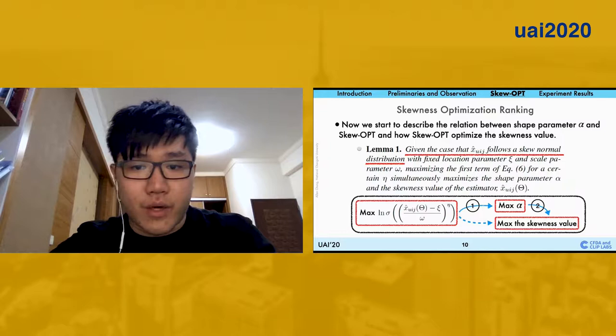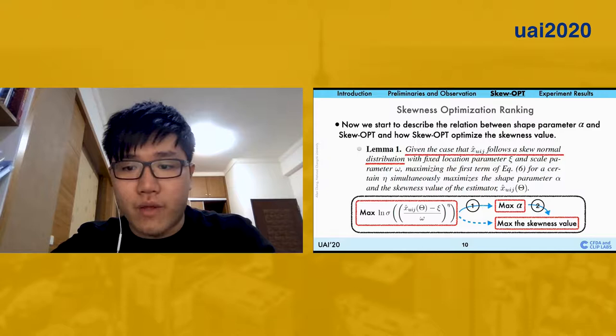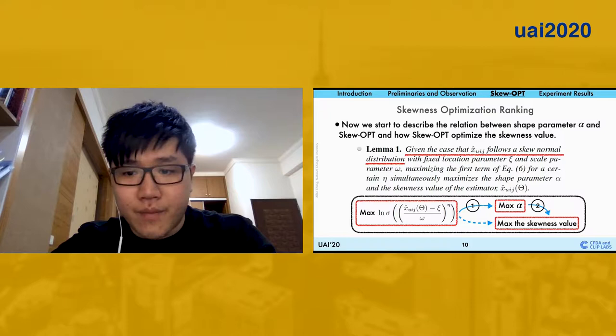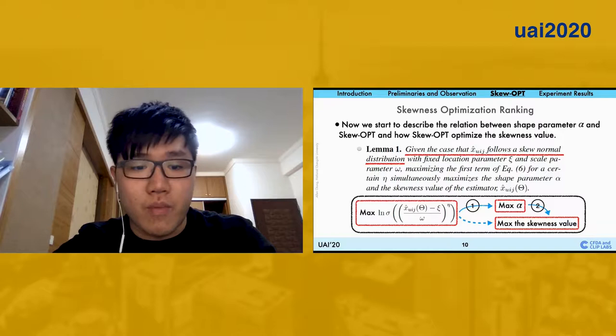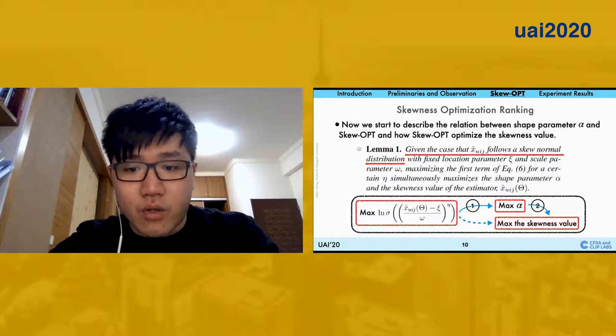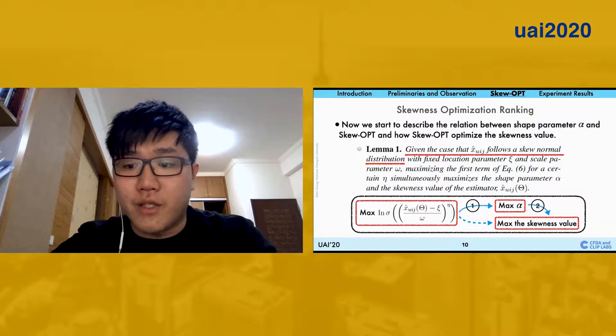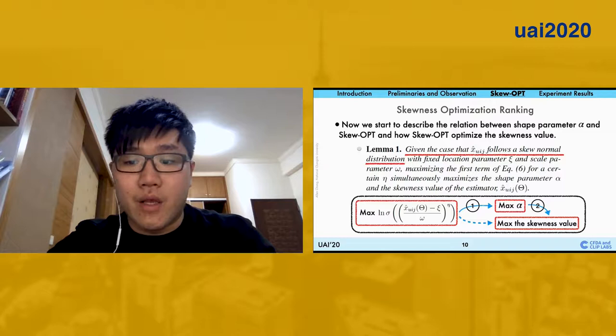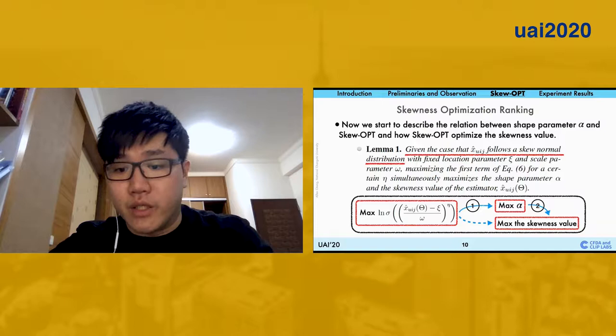We provide the lemma to describe it, and the working flow of the derivations shows at the bottom of the slide. Since we proved that skewness optimizations is positively proportional to the shape parameter at the first stage of improvement, and the second stage also provides that the shape parameter is also positively proportional to the skewness values. Therefore, we can claim that while we maximize skewness optimizations, it also maximizes the skewness value.